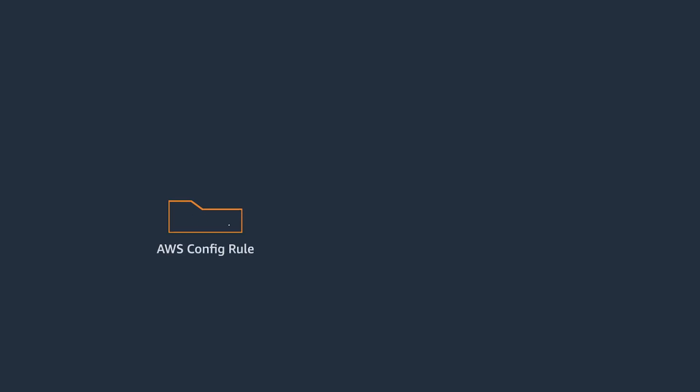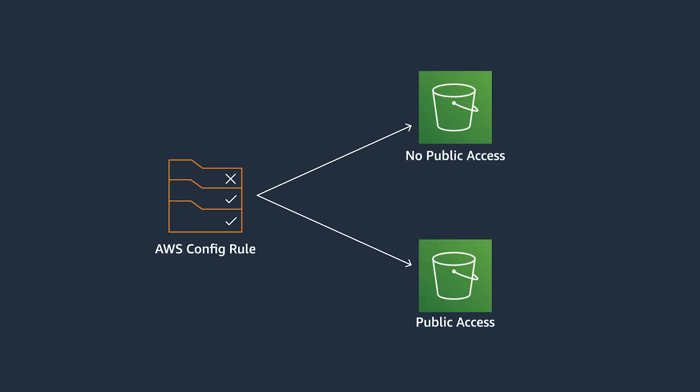To get started, let's talk about what AWS Config is and what conformance packs are. Config is a service that lets you assess and audit your AWS infrastructure by monitoring and recording your resource configurations. This service lets you create managed rules, which are predefined, customizable rules that AWS uses to evaluate whether your resources comply with common best practices.